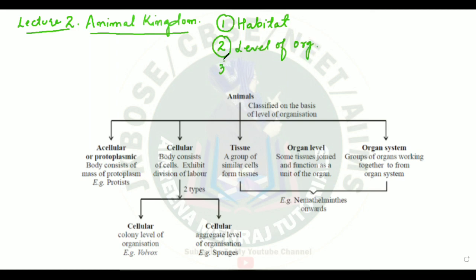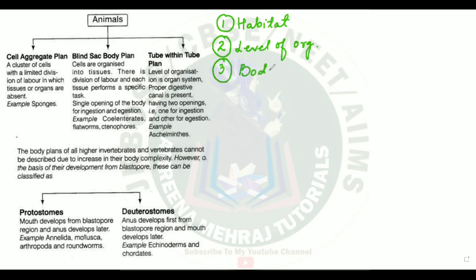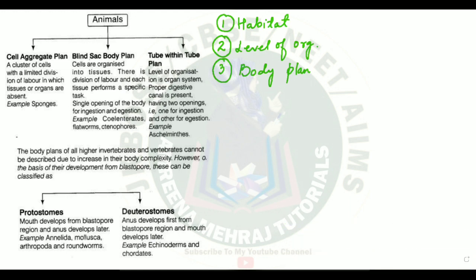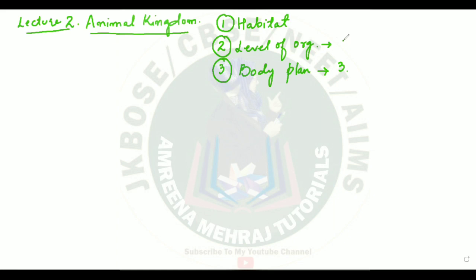Third was diversity of animals based on their body plan, in which the body plan could be a cell aggregate plan, a blind sac plan, or the advanced tube-within-a-tube body plan. I have also shown you the levels of organization: cellular level, tissue level, and organ and organ system level of organization. Examples were given pertaining to terrestrial and aquatic habitats.